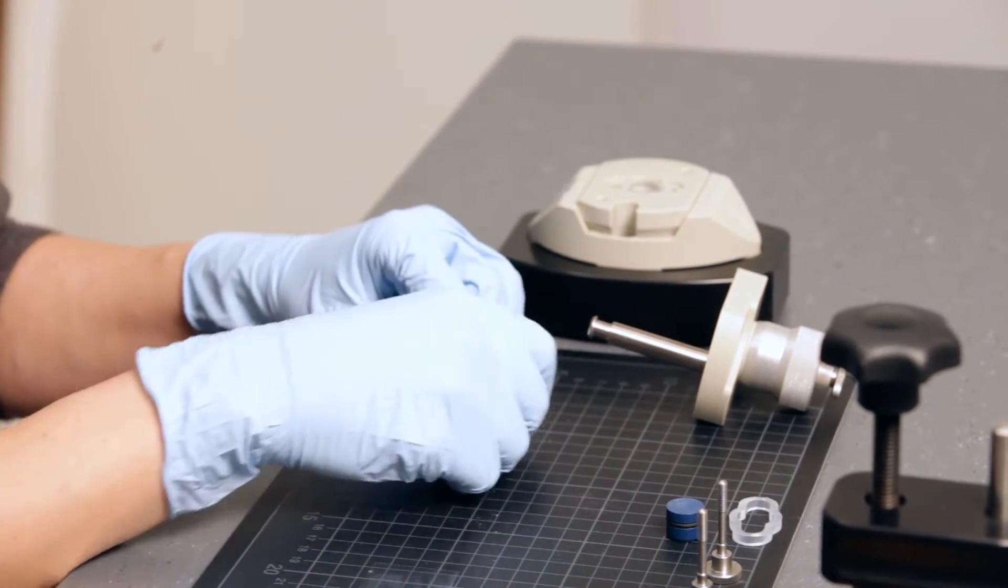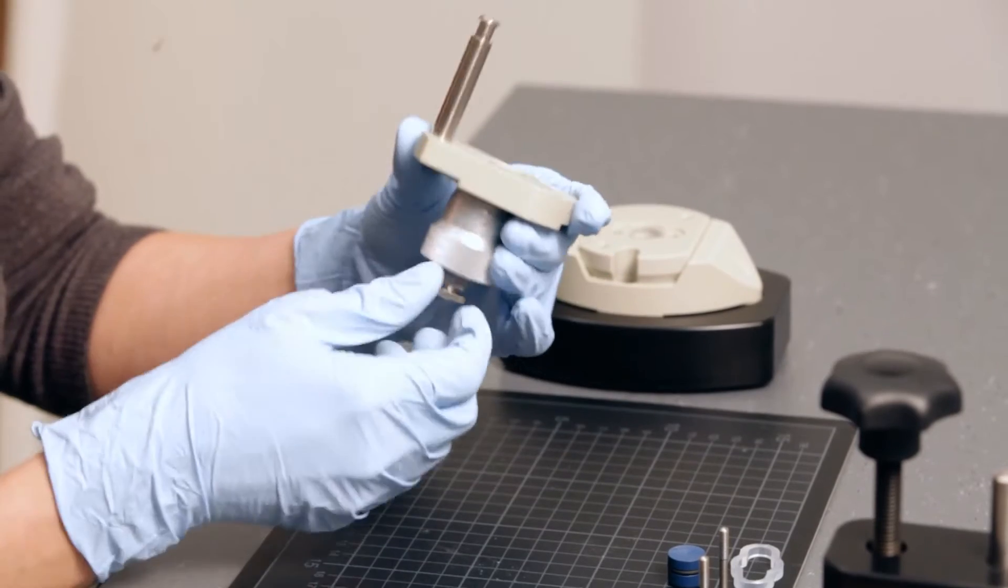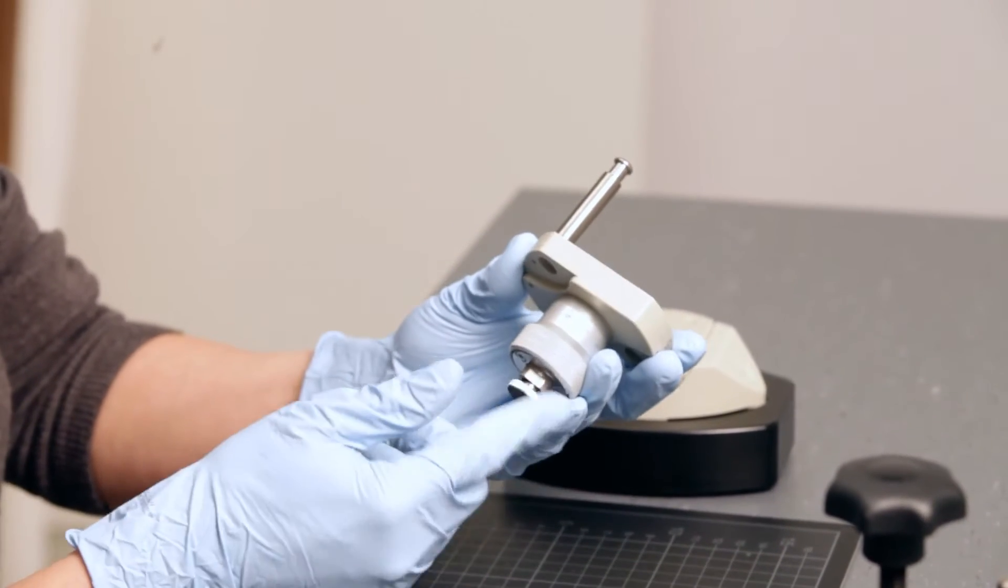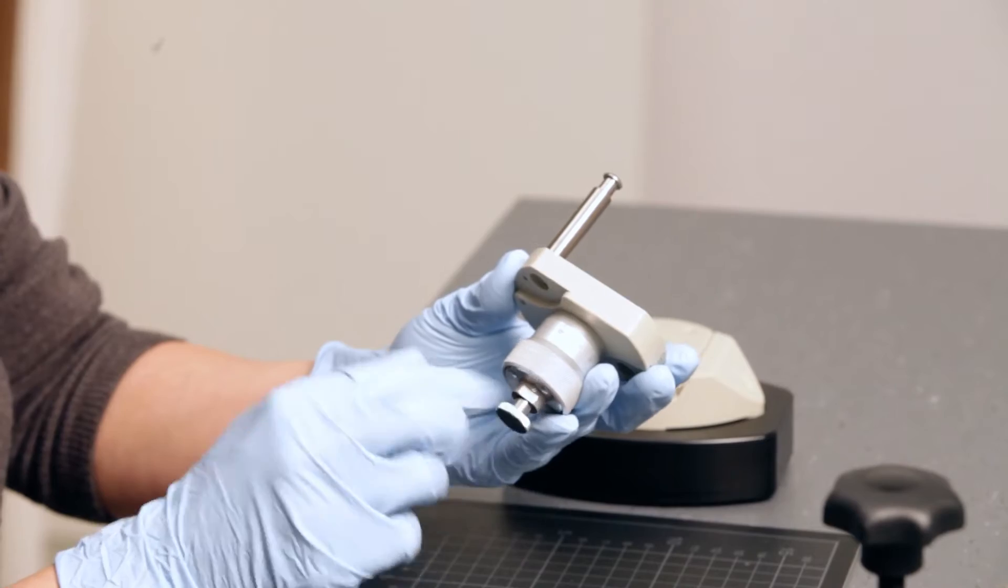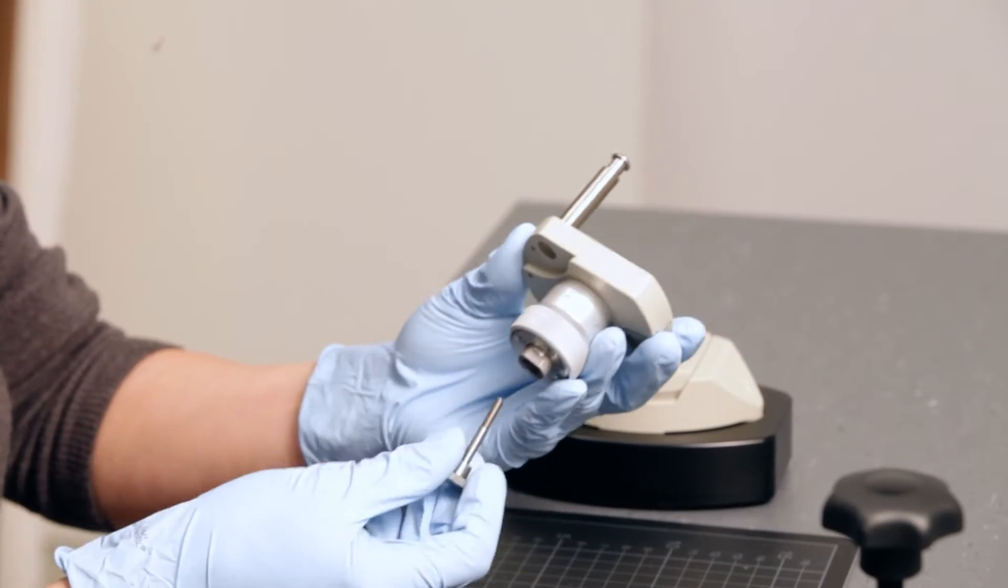To remove the sample holder of the upper part of the cell, loosen the screw at the adjustment knob and use this screw to push out the sample holder.